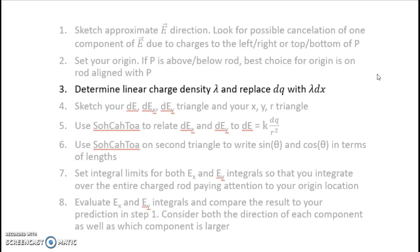We determine our linear charge density lambda and we replace dq with lambda times dx. Next, we had to sketch our two triangles. One is an electric field triangle relating the x and y components. The other is a triangle in terms of physical lengths, relating our horizontal and vertical lengths, as well as our overall distance between that point on the rod and our point of interest r. We use SOHCAHTOA to relate the components of our electric field. We use SOHCAHTOA a second time to write sine theta and cosine theta in terms of lengths, because that's ultimately what we're going to integrate over, is a length variable.